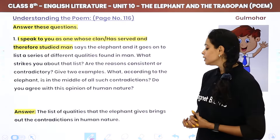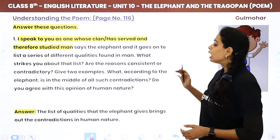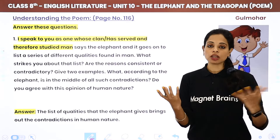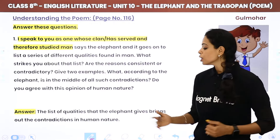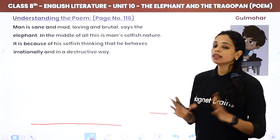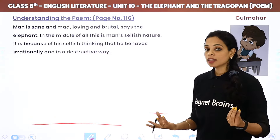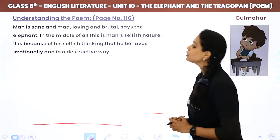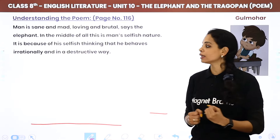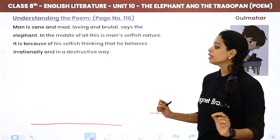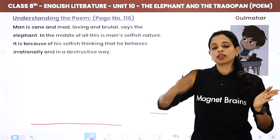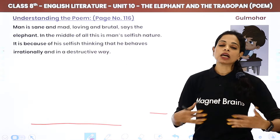The answer is: the list of qualities that the elephant gives brings out the contradictions in human nature. Man is sane and mad, loving and dangerous, says the elephant. In the middle of all this is man's selfish nature — his egoism. It is because of his selfish thinking that he behaves irrationally and in a destructive way, without thinking about the consequences of his actions.